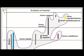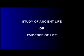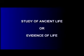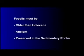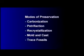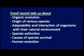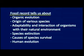To sum up, the science of paleontology is the science of studying ancient life or the evidence of life, which we call fossil. A fossil must be older than the Holocene. The fossil record can be preserved in various ways, as discussed in the modes of preservation of fossils. The fossil record tells us about organic evolution, the origin of various species, their adaptability, their interaction with the natural environment, their extinctions, the causes of their survival, and our own evolution. Thank you.